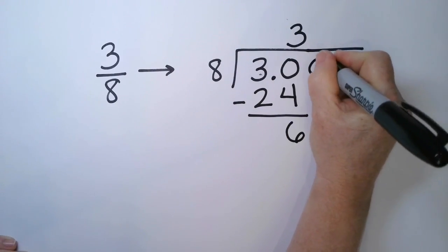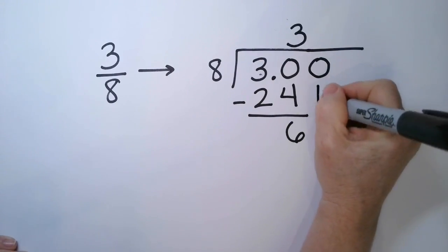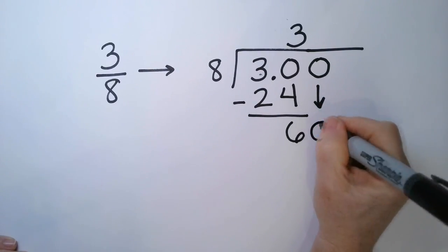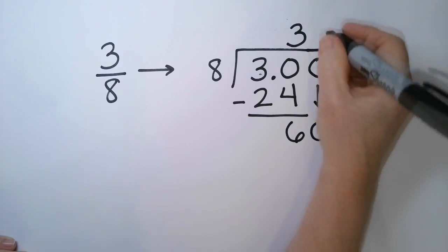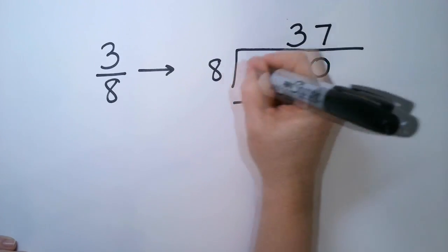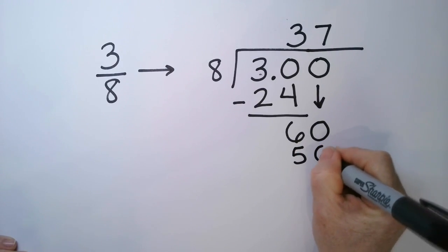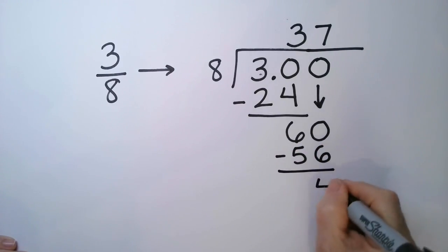And we take the difference and we get a 6. Now we're going to add another 0 because we have a remainder. I want to get a few more decimal points up here. So we're going to drop the 0. 8 goes into 60. So we have 7. 7 times 8 is 56. Take the difference. I have a 4.